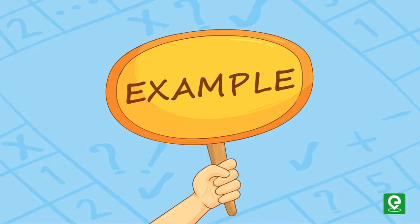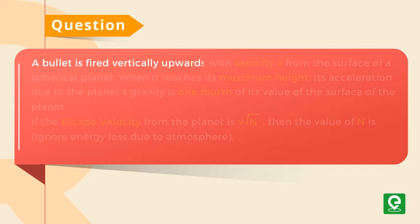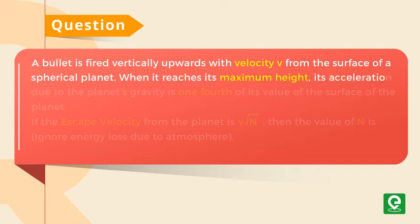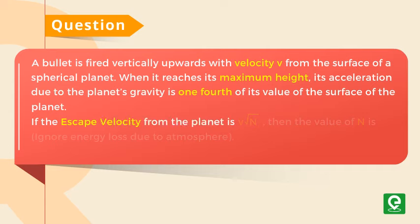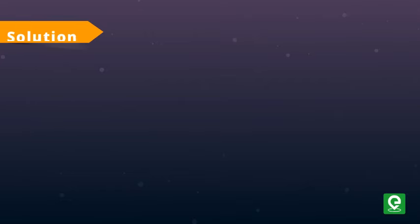Question: A bullet is fired vertically upwards with velocity v from the surface of a spherical planet. When it reaches its maximum height, its acceleration due to the planet's gravity is one-fourth of its value at the surface of the planet. If the escape velocity from the planet is v root n, then the value of n is? Ignore energy loss due to atmosphere. This question was asked in JEE Advanced 2015 exam.